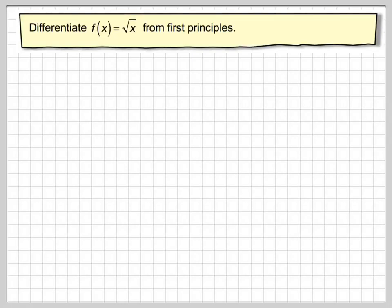Right, in this video we're going to differentiate the square root of x, i.e. the square root of x is a third. So we've got f of x is square root of x, and we're going to use from first principles. So f of x is the square root of x.